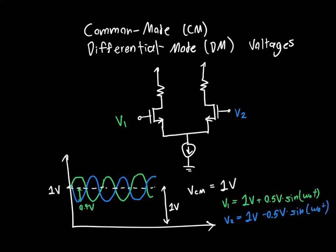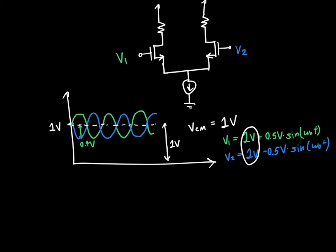We can see that the one volt is common to both signals. The mathematical definition for the common mode voltage is simply the average of the two: VCM = (v1 + v2) / 2. If we add v1 and v2, the one-volt terms give two volts, divided by two is one volt, and the 0.5·sin(ω₀t) and −0.5·sin(ω₀t) cancel to zero. So the common mode voltage is exactly one volt, which is exactly what we'd expect.